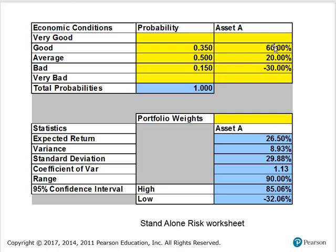You input the probabilities and the returns. The expected return of this asset is 26.5% and the standard deviation — the risk of this asset — is 29.88%. By itself it really doesn't mean anything; we have to understand what we're talking about when we measure risk. The bigger the number, the greater the risk of the asset. The best way to make comparisons is with the statistic called the coefficient of variation, which is 1.13. Again, the bigger the number, the greater the relative riskiness of the asset.